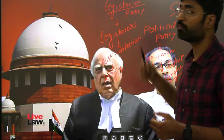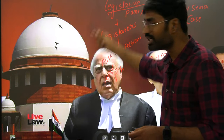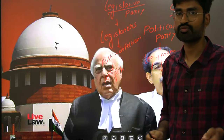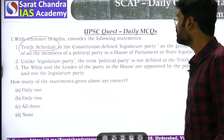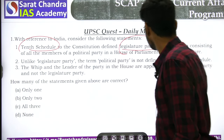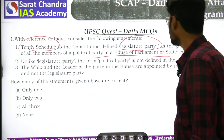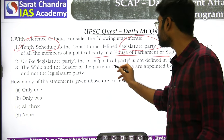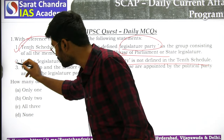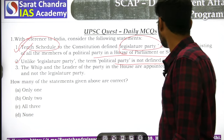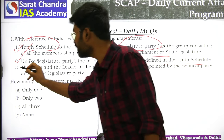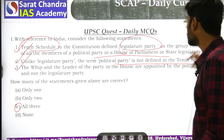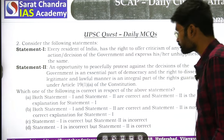The Supreme Court clarified that anti-defection applies to the legislative party, but the whip must be given the due respect of the political party. Now looking at the question: the 10th Schedule defines the legislative party as a group consisting of all members of a political party in the house of Parliament or state legislature — that is a correct statement. The whip and the leader of the party are appointed by the political party, not the legislative party. All statements are correct here.